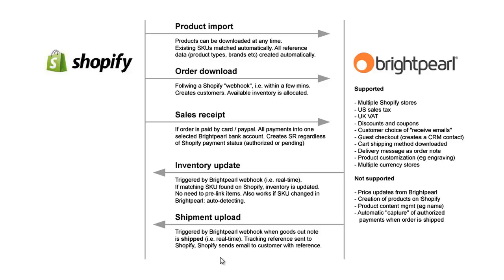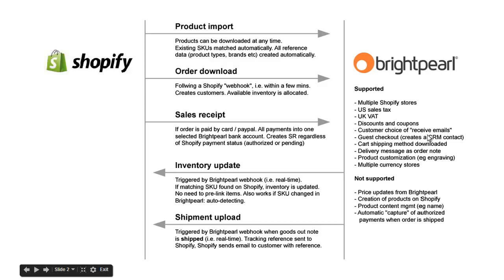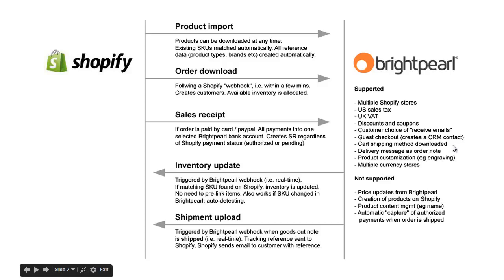Let me also look at some of the detail on the right-hand side. You can have as many Shopify stores as you like connected to your Brightpearl account, and each Shopify store is set up as a sales channel. We support sales tax and VAT, as well as discounts and coupons on Shopify — these come through to Brightpearl as line items. We respect the customer's choice to receive emails or not in the Shopify checkout, as well as guest checkout. The shipping method chosen in Shopify is also respected — downloaded as a line item, and if it matches one in Brightpearl, it's also set on the order.